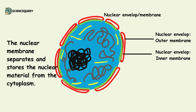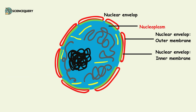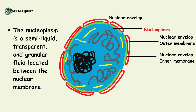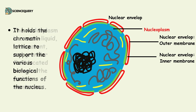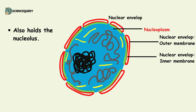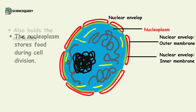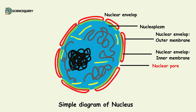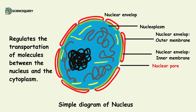The next important part of the nucleus is the nucleoplasm. The nucleoplasm is a semi-liquid, transparent and granular fluid located between the nuclear membrane. It holds the chromatin lattice to support various biological functions of the nucleus. It also holds the nucleolus and stores food during cell division. The nuclear pore regulates the transportation of molecules between the nucleus and the cytoplasm.